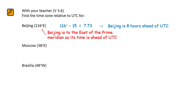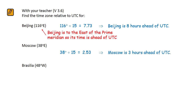Moscow has a longitude of 38 degrees to the east. Take its longitude and divide by 15. Rounding to the nearest, we round up to 3. Because Moscow is to the east of the prime meridian, it will be ahead — Moscow is 3 hours ahead of UTC.